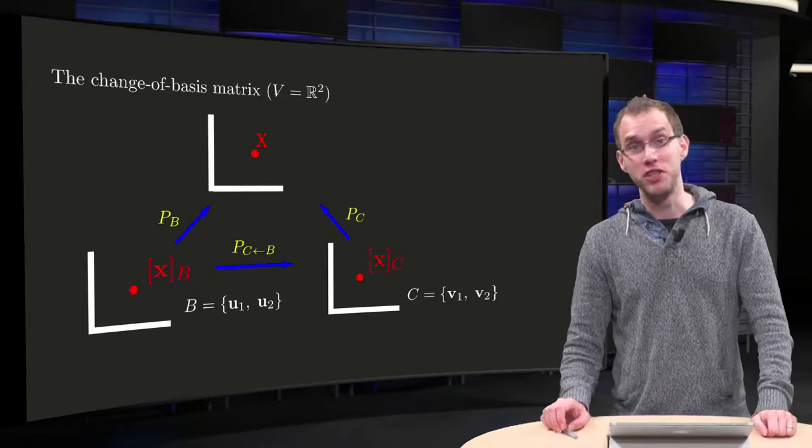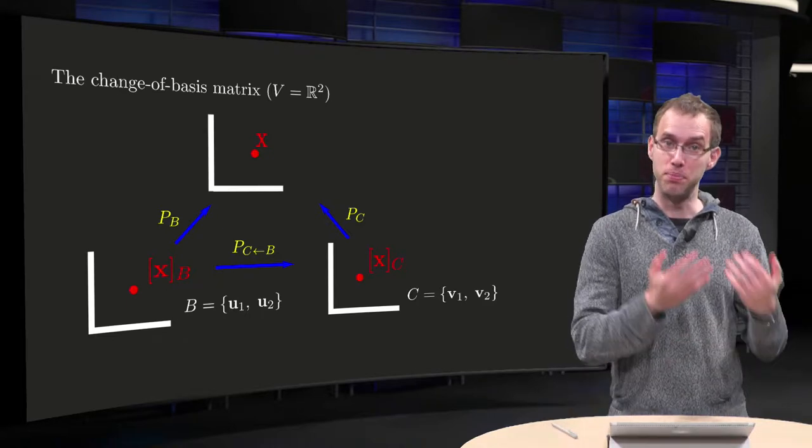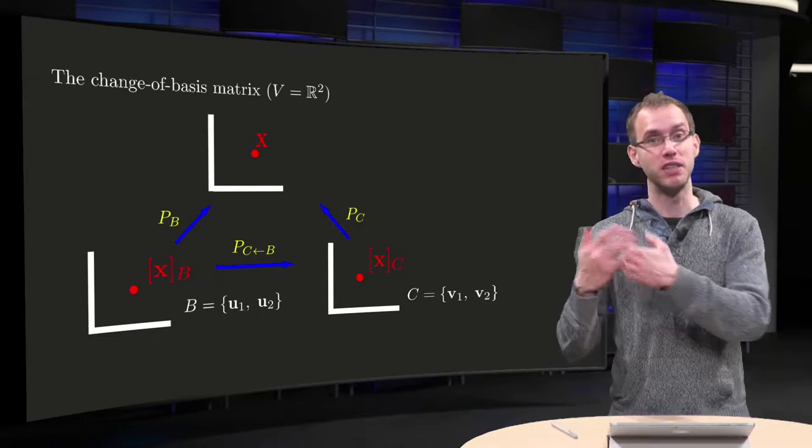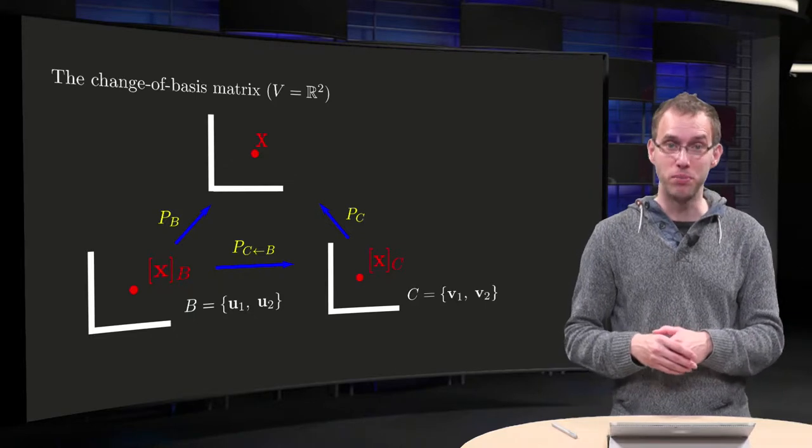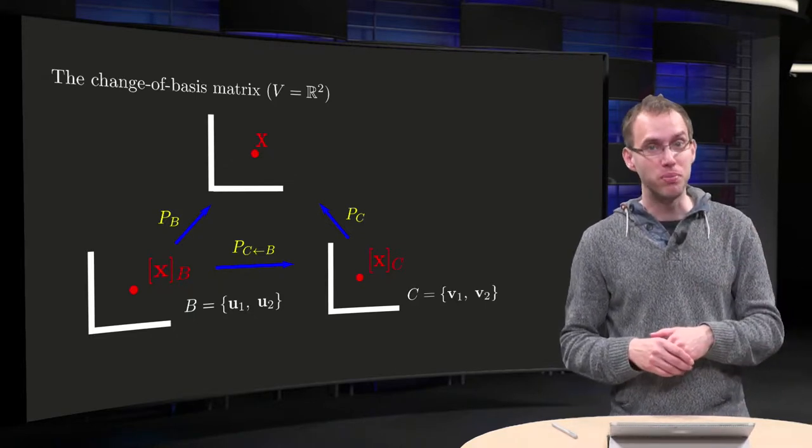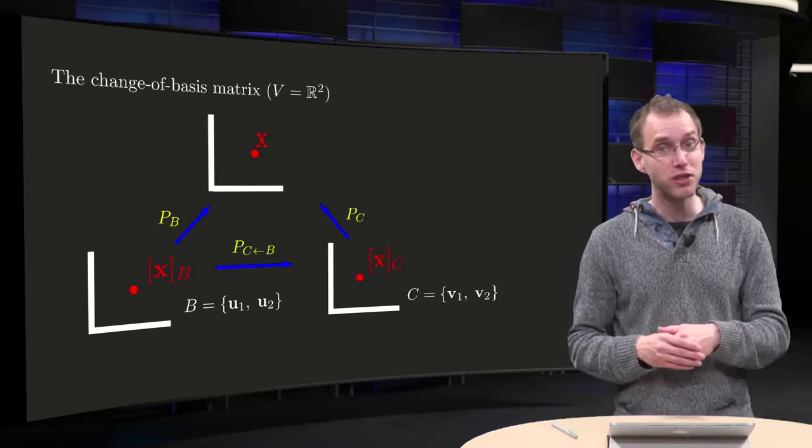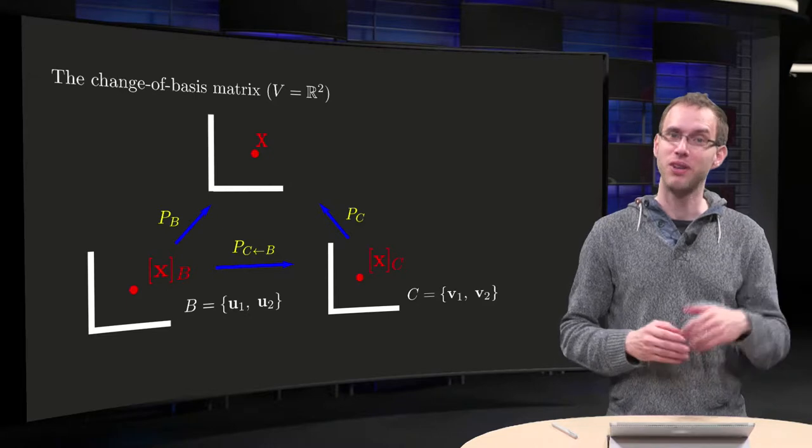If you have a basis b and a basis c for Rn, you can convert a coordinate vector x in the basis b to a coordinate vector x in the basis c using a change of coordinate matrix. In this video you will learn how to compute this matrix. You will learn the general procedure and a slightly faster algorithm to compute this matrix, so let's take a look.